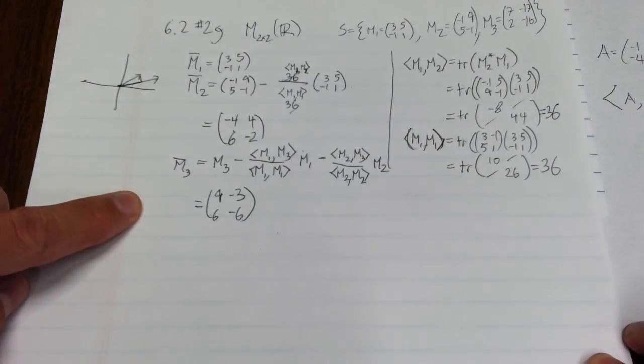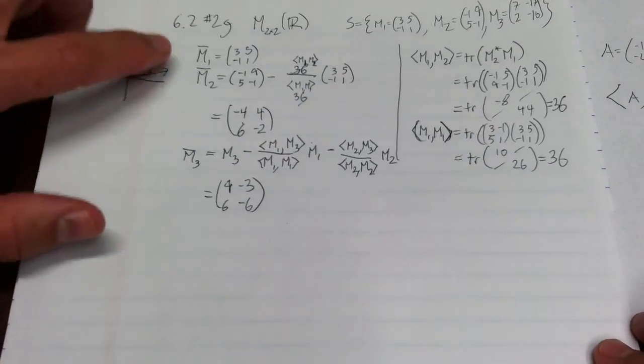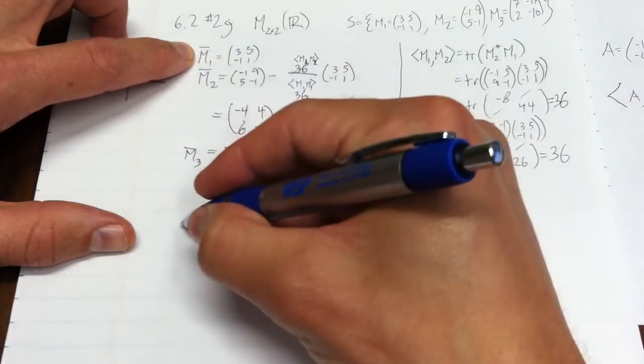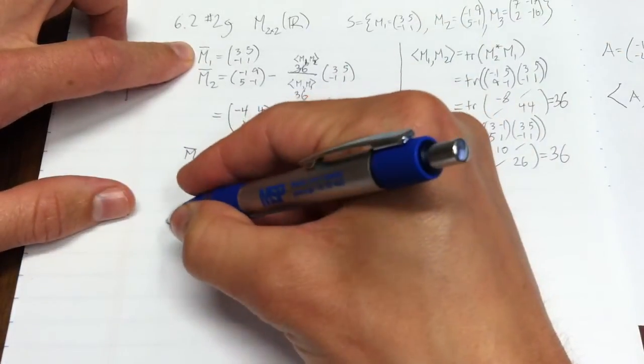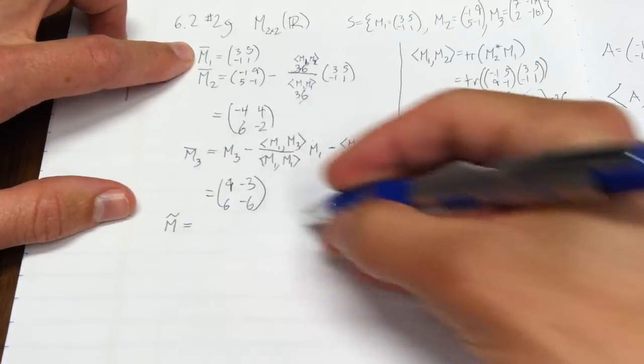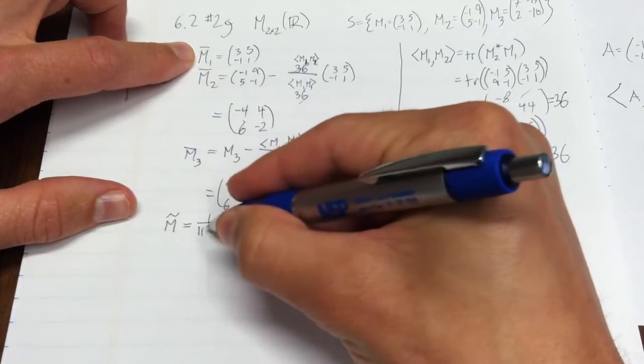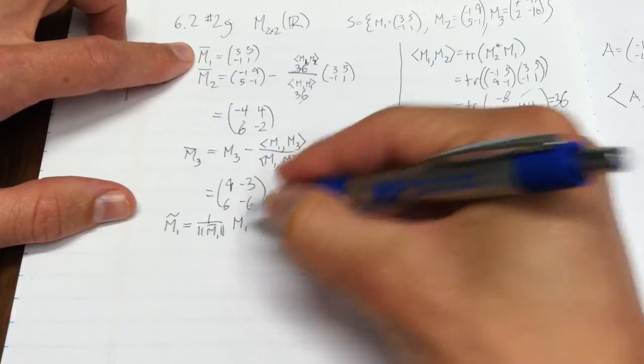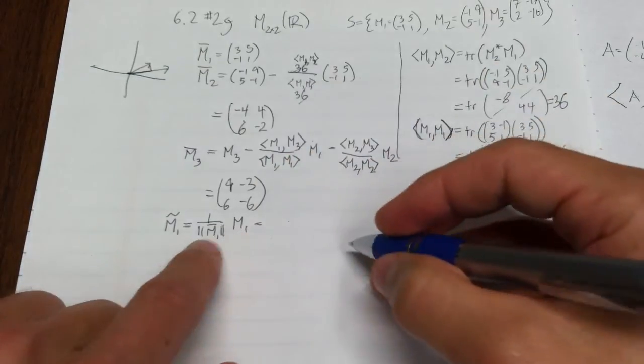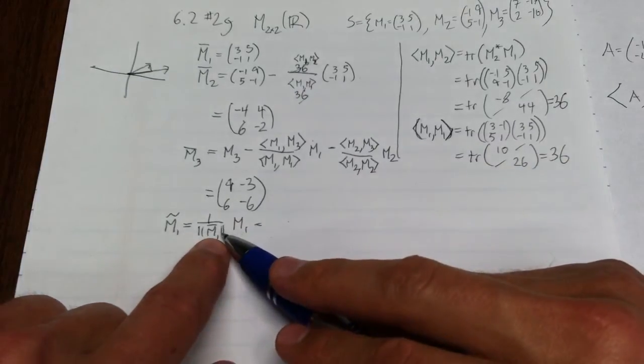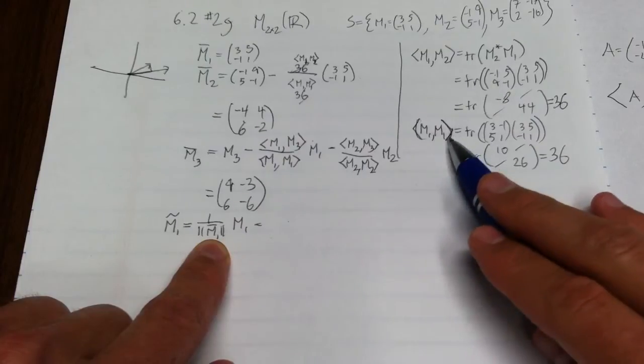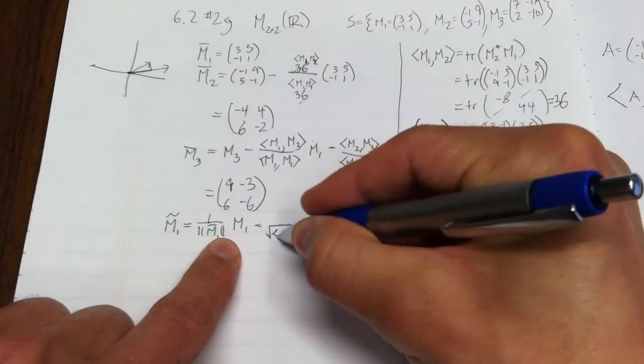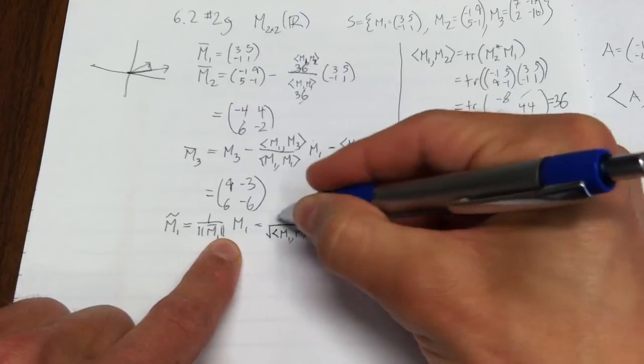Those are orthogonal. The inner product of any two of them is 0. However, we can do better than that. We could say, let's make that have length 1. That means that the inner product of m bar with itself would be 1. So we need a new vector, m tilde. The way we're going to do that is we're going to take 1 over the length of m bar times m1. That'll make it be length 1.